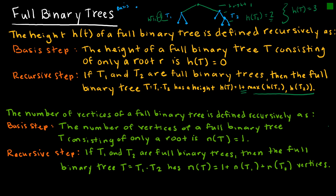The other definition covers the number of vertices of a full tree. For the basis tree — just one vertex — the count is 1. The number of vertices of a tree created by combining other trees is the number in T1 plus the number in T2 plus 1, because we added a new root at the top. It's really just formalizing things that are pretty straightforward.